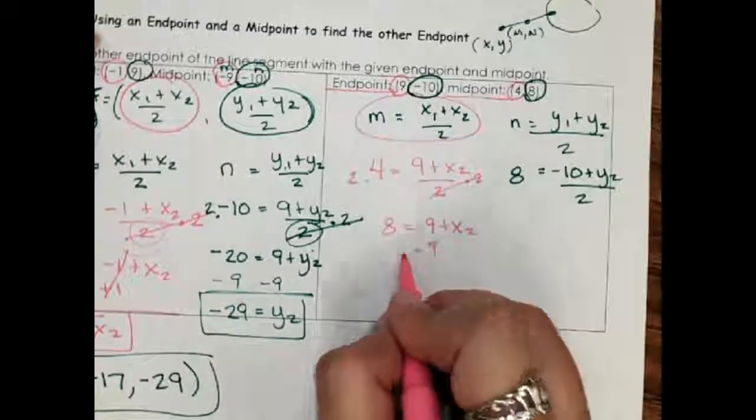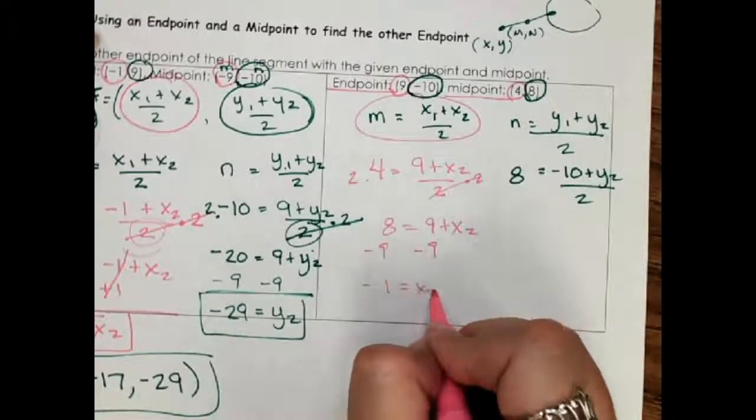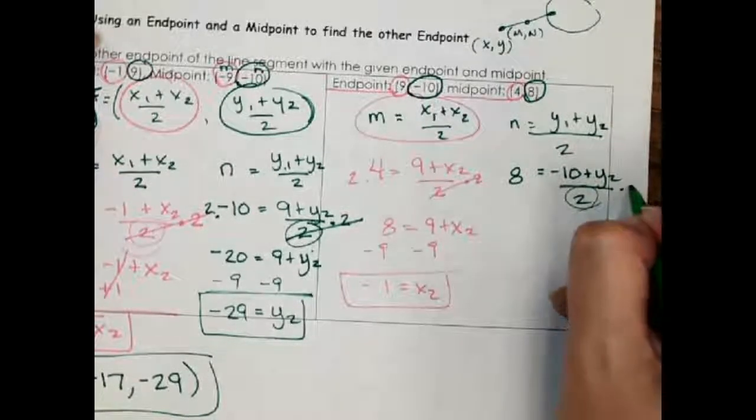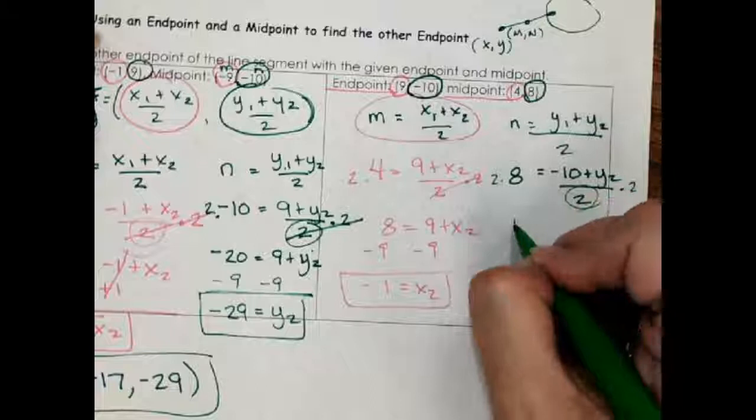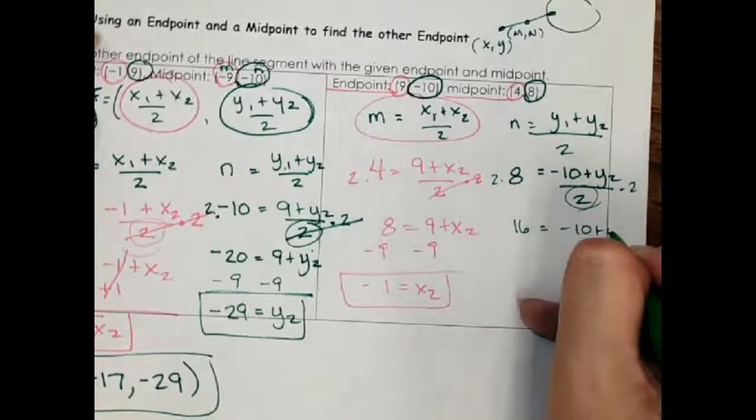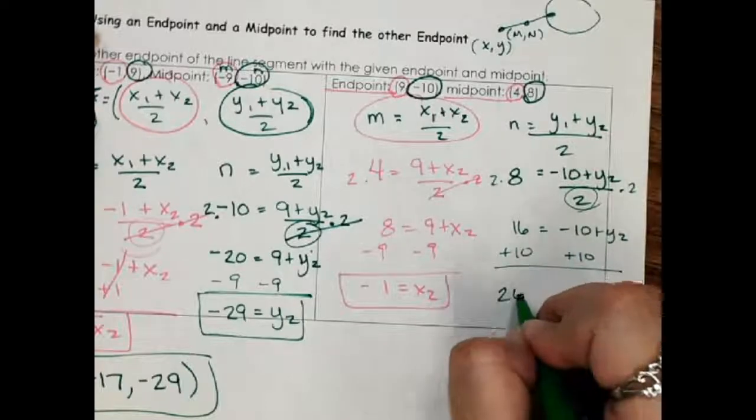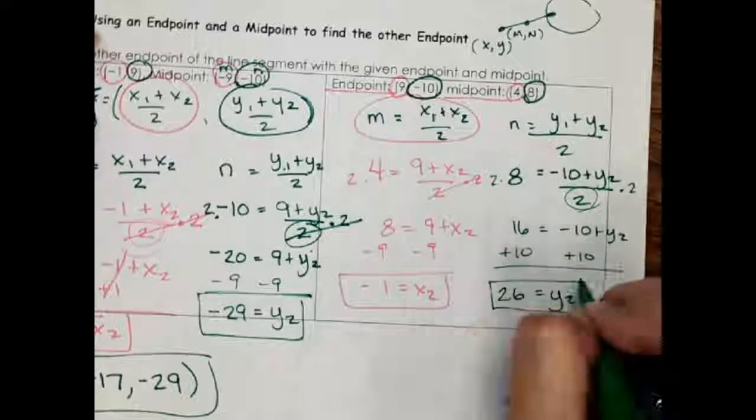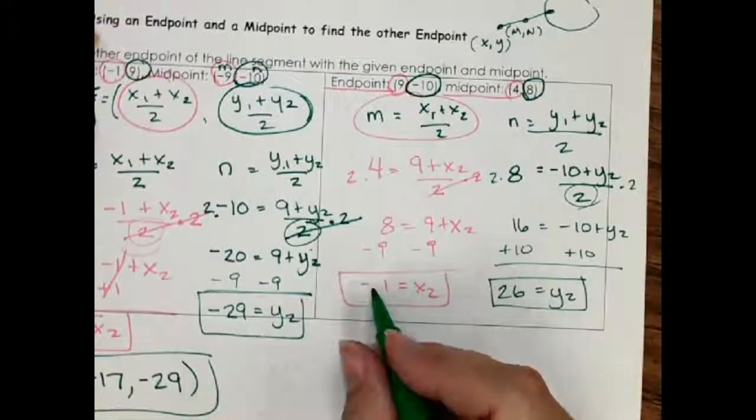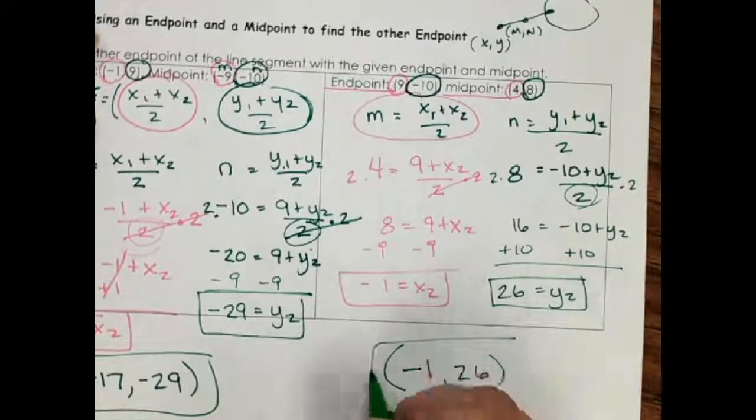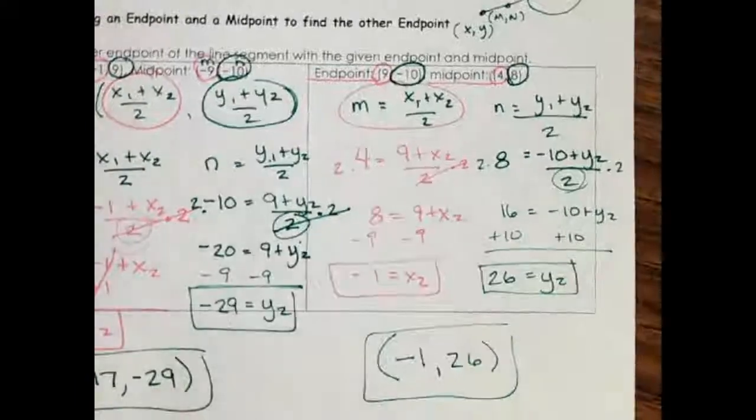Remember, you multiply times the bottom and subtract. And our last step is to write it as a point. Here's my x, here's my y, and that's my answer.